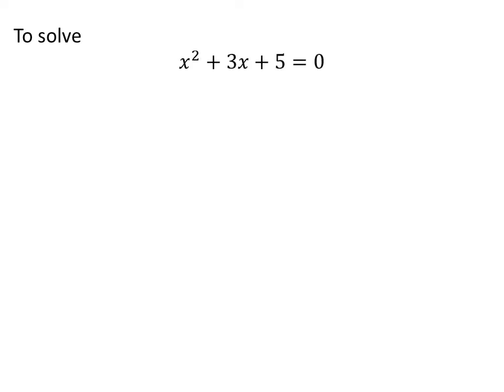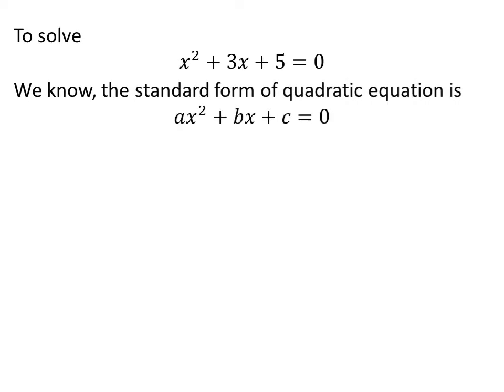The given quadratic equation is x² + 3x + 5 = 0. We know the standard form of a quadratic equation is ax² + bx + c = 0. Here, a, b, and c are constants.